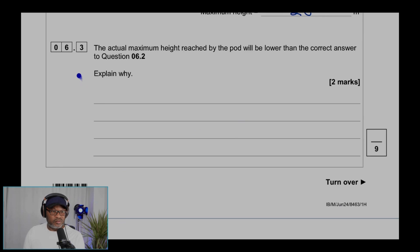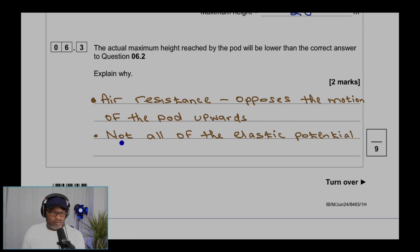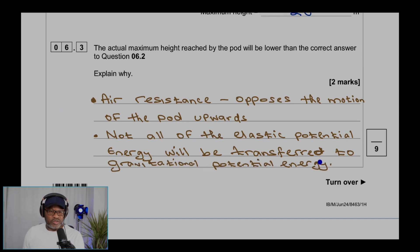Question 6.3: The actual maximum height reached by the pod will be lower than the correct answer to question 6.2. Explain why. Air resistance will oppose the motion of the pod upward, so not all of the elastic potential energy will be transferred to gravitational potential energy.